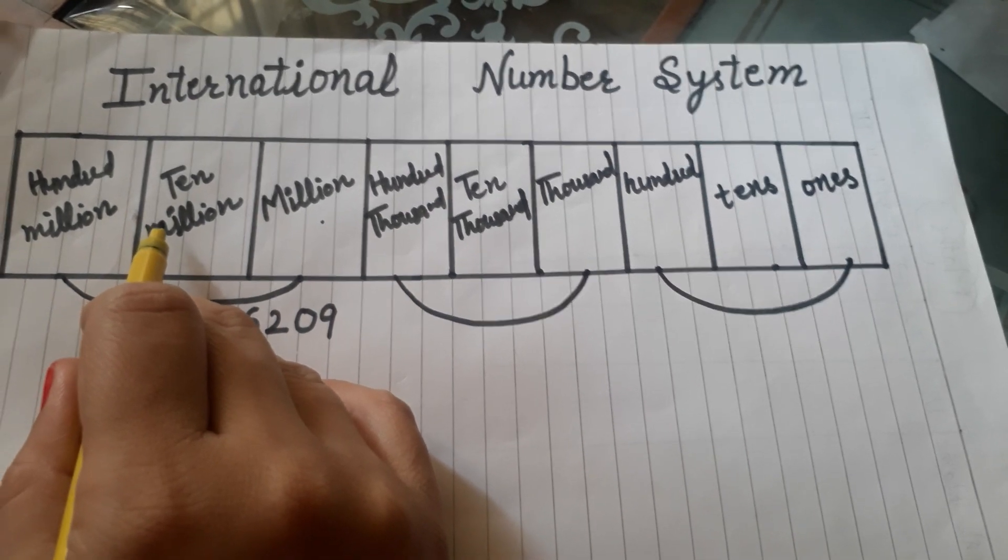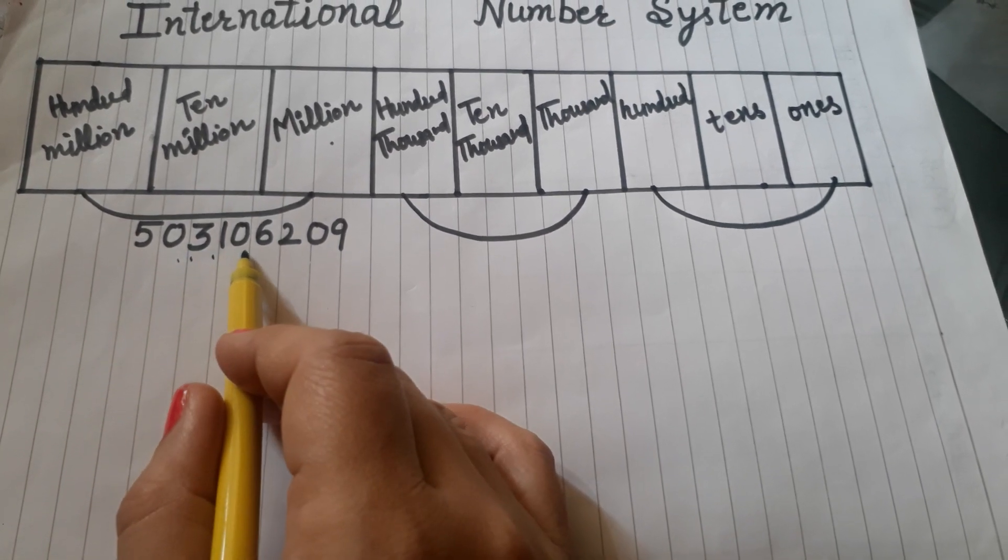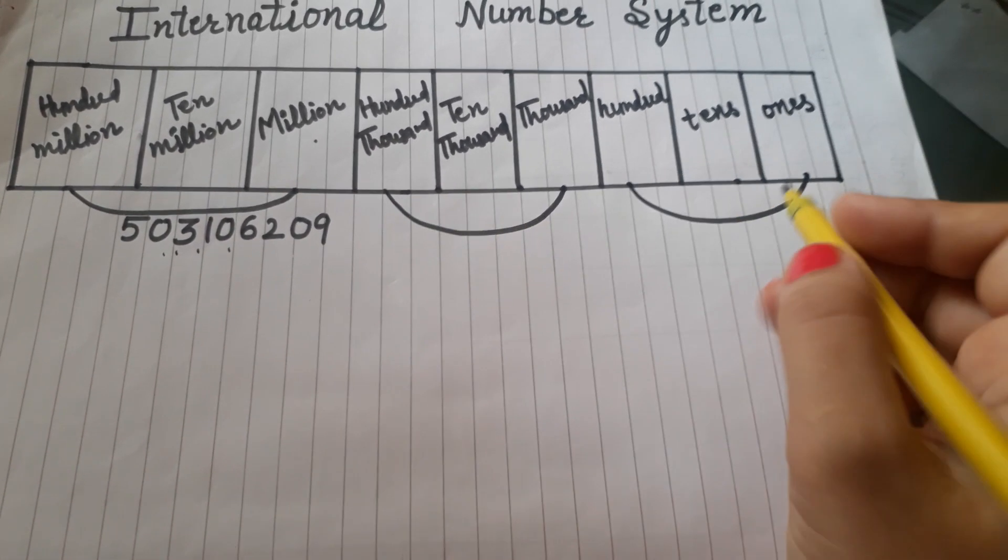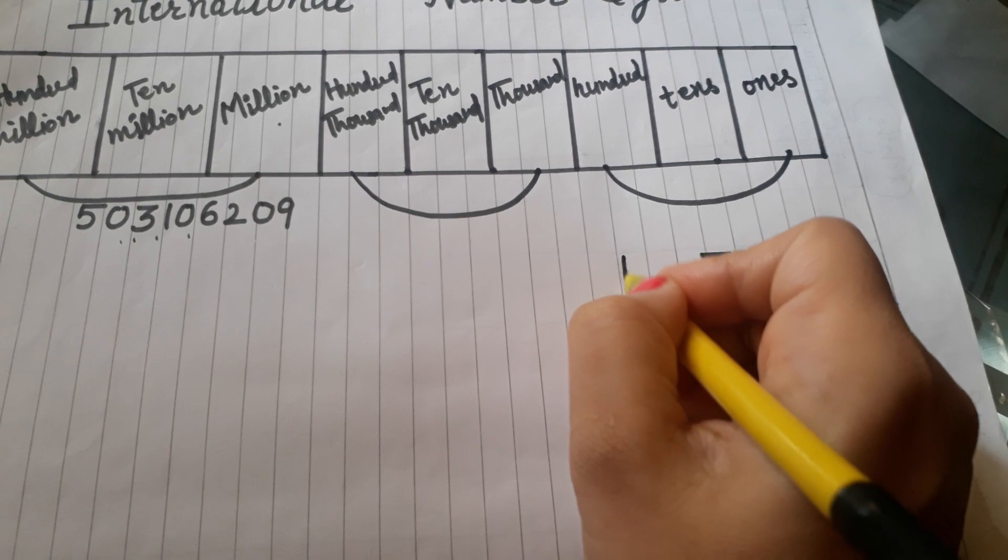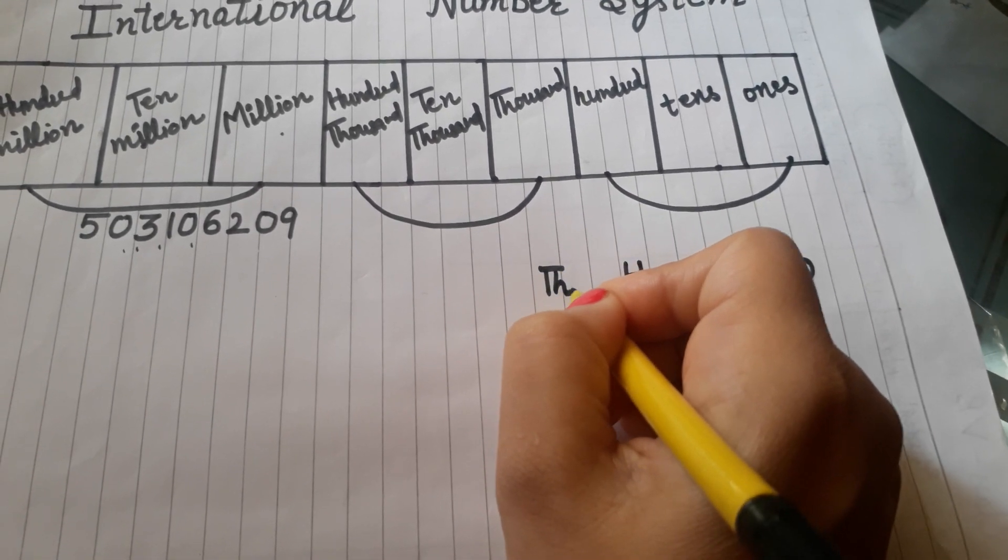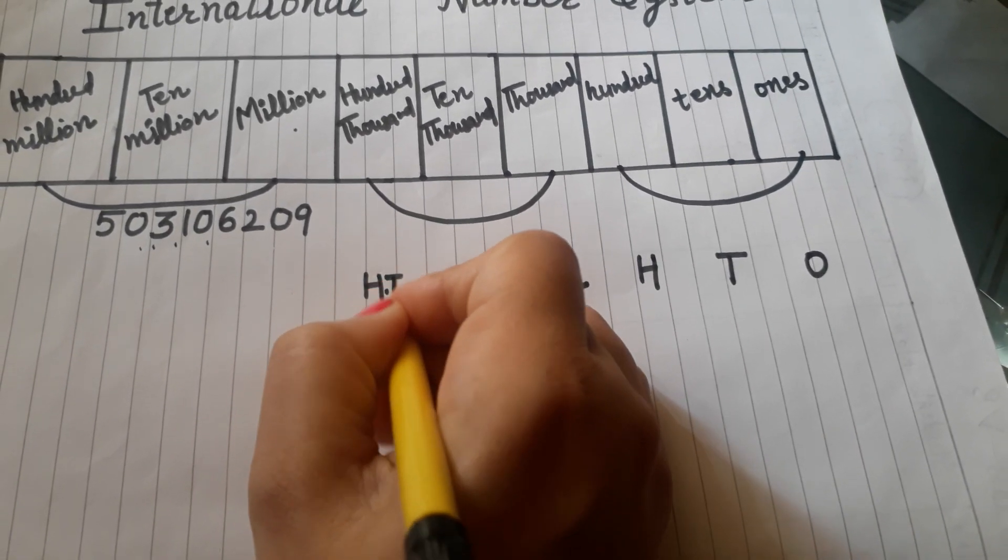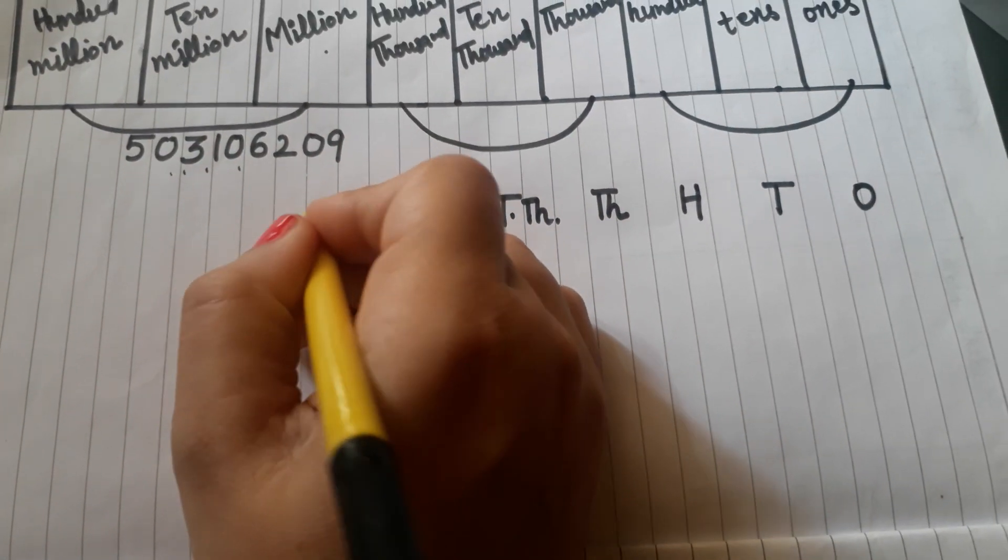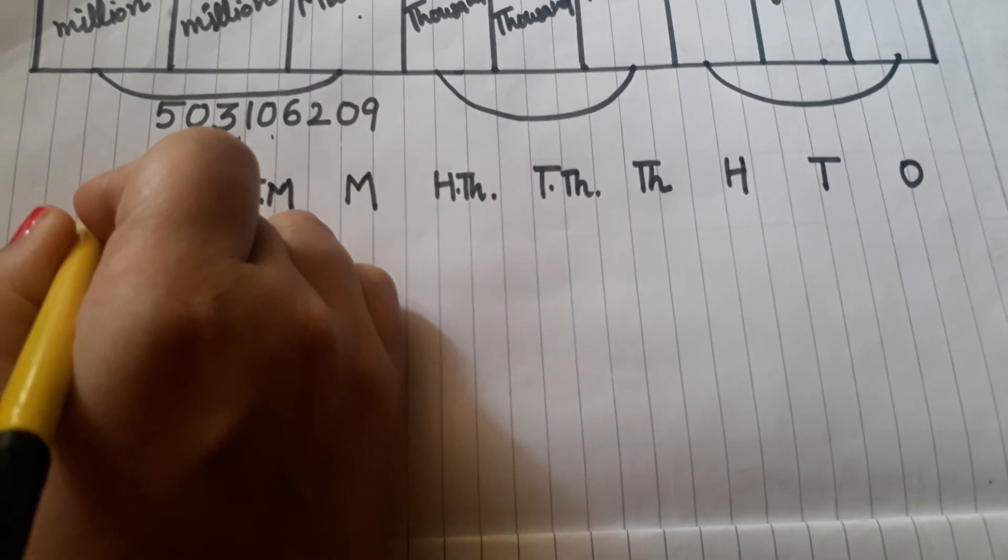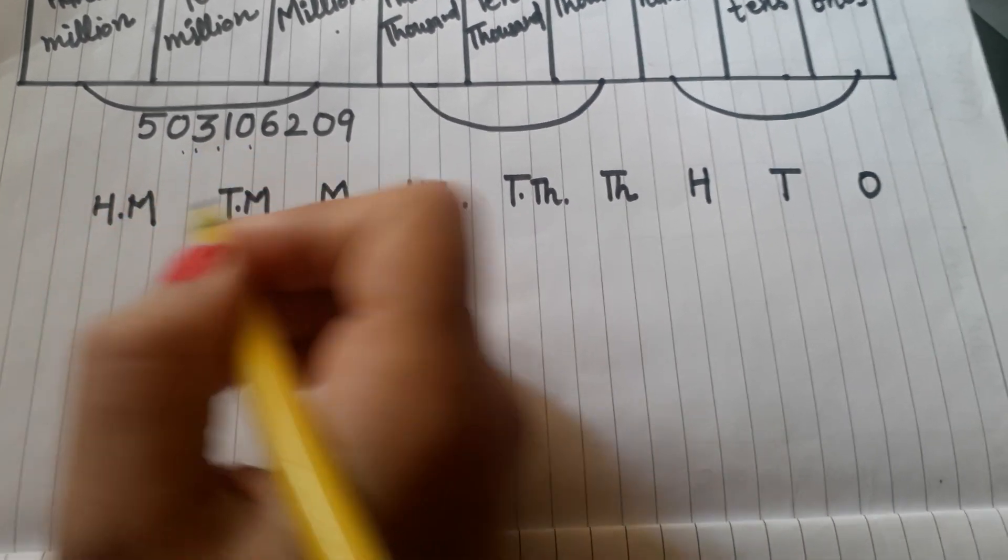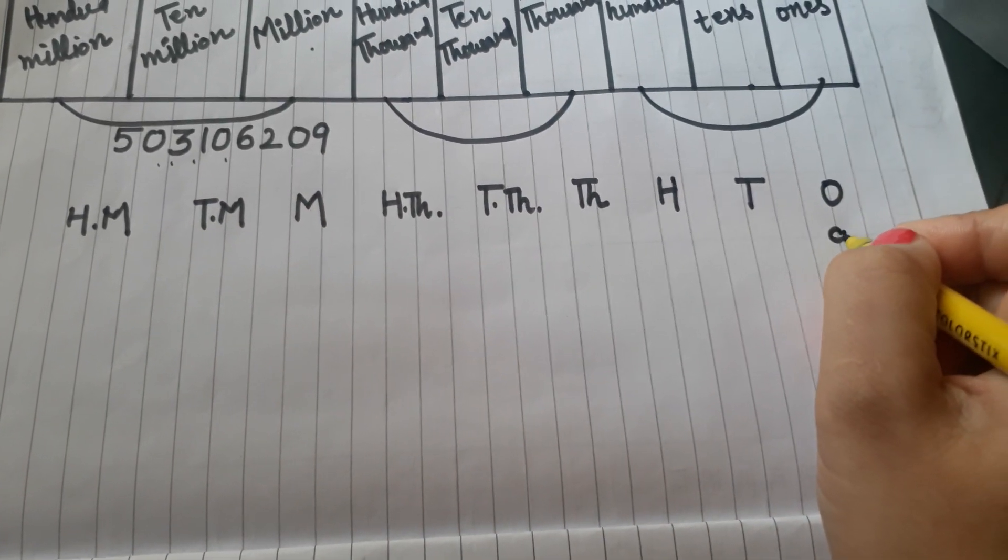So there is a number: 503106209. We will write it in the chart. Start with ones, tens, hundreds, thousands, ten thousands, hundred thousands, million, ten million and hundred million. Now start from the right. In the ones place, we write 9.